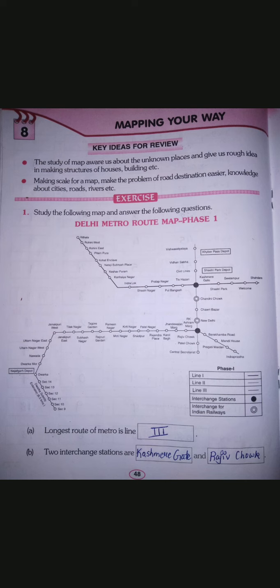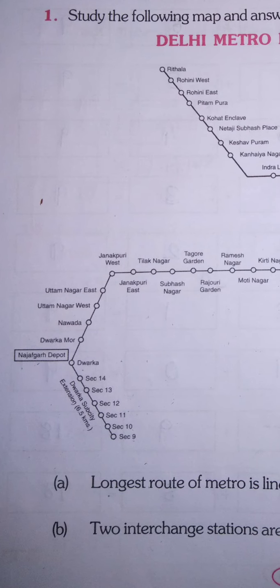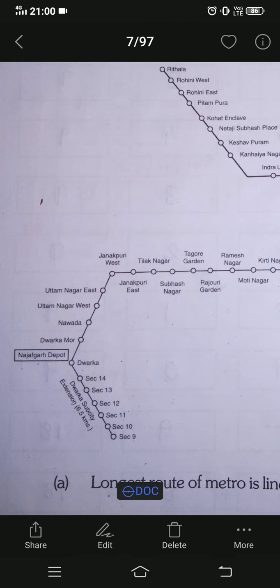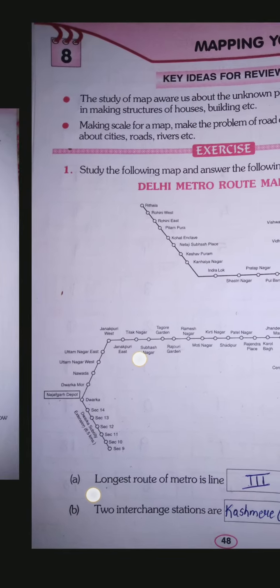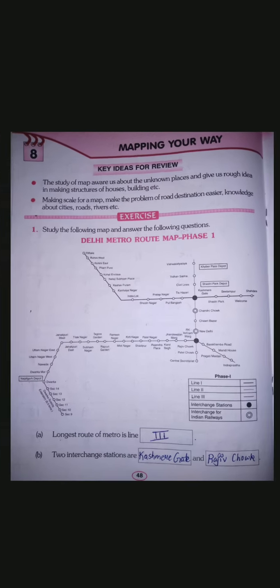Next question: the southernmost station of the metro is? You know the directions — north, south, east, and west. They are asking the southernmost station, meaning the station furthest to the south (bottom of the map). That is Dwarka. So you will write Dwarka in this column.